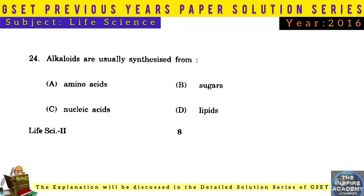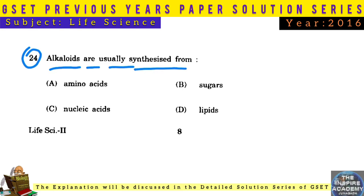Question No. 24: Alkaloids are usually synthesized from amino acids.